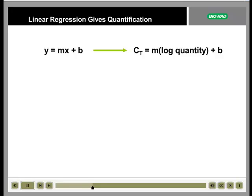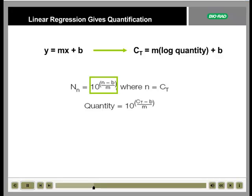From the equation for the linear regression, we can derive the following equation to determine the quantity, n, of an unknown sample. The quantity of copies in sample n is equal to 10 raised to the power of the quantity, n minus b over m. Little n in this equation is the CT value for the sample.